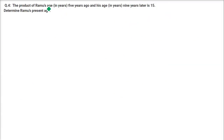The product of Ramu's age 5 years ago and his age 9 years later is 50. Determine Ramu's present age. Let us assume the present age of Ramu is X.